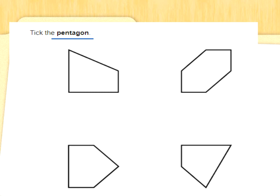Tick the pentagon. Can you remember how many sides a pentagon has? A pentagon has five sides. Can you spot the five-sided shape? Let's count the sides of all the shapes. Top one: one, two, three, four — not that one. Top right: one, two, three, four, five, six — not that one. Bottom left: one, two, three, four, five. There it is — a pentagon has five sides. Did you get it? Fantastic.